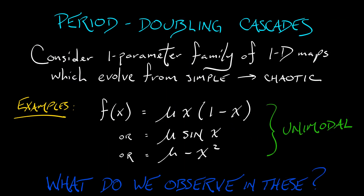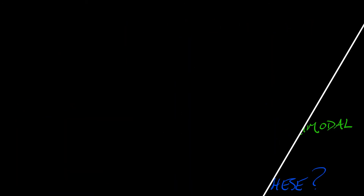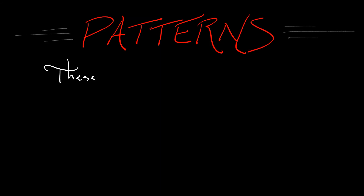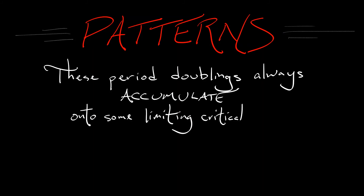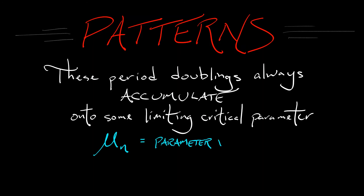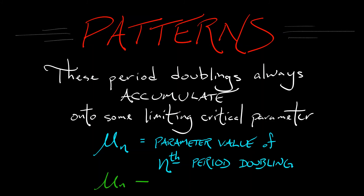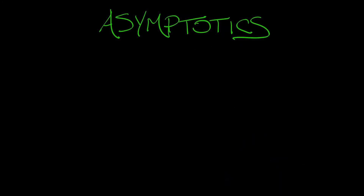What do we observe in these different examples — and not just these three, but in others as well? There are some fascinating patterns to be seen as these period doublings accumulate onto this limit, this critical parameter. If we denote by mu sub n the parameter value of the nth period doubling, then these are going to limit onto some critical parameter value, mu sub infinity.